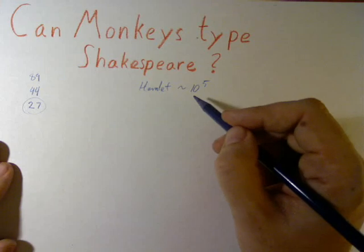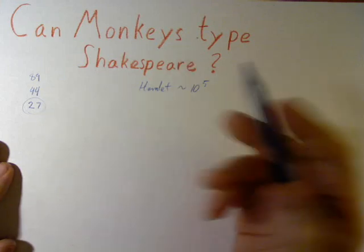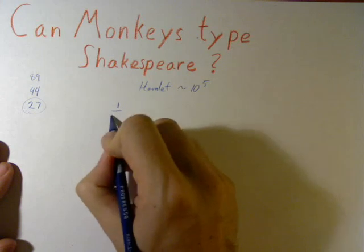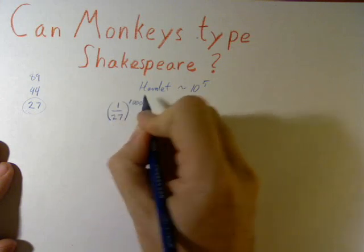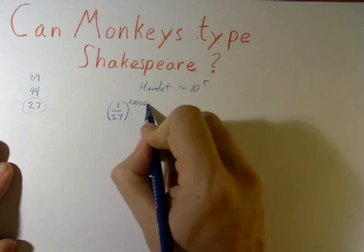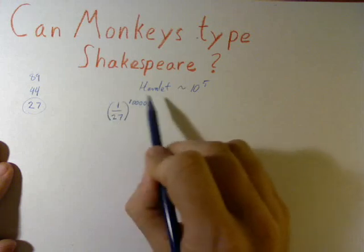So, the probability, I'm randomly typing on our special 27-key keyboard, is 1 over 27 to the 10 to the 5th. That's 100,000. This is our probability.